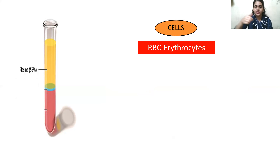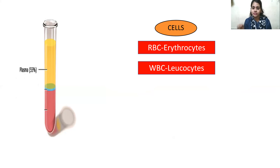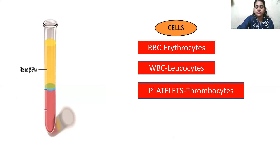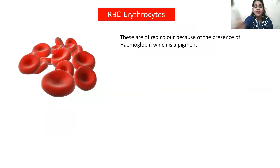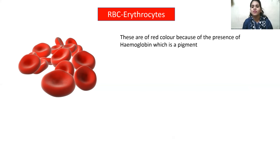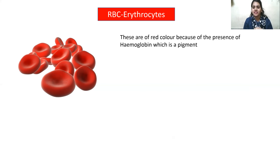Blood cells are of three types. The first is RBC, that is erythrocytes. The second is WBC, that is leukocytes. And the third is platelets, that is thrombocytes. So the three cells present in our blood are RBCs, WBCs, and platelets. The full form of RBC is red blood cell, and from the name we can understand that this is the cell which gives the red color to our blood. It gives red color because it consists of a pigment called hemoglobin. Hemoglobin is a pigment that gives red color to our blood.